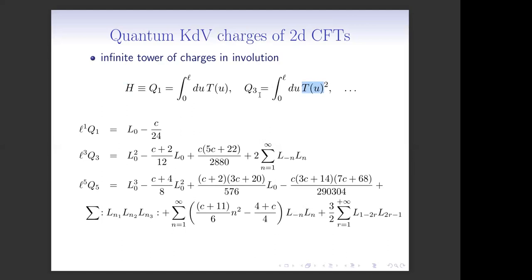The simple form of those Q charges only holds for the first two. When you try to write down the form of those operators in terms of the Virasoro generators, the Hamiltonian is simply L0 minus c over 24. But Q3 already has quite a bulky form, Q5 is much larger requiring two full lines to write down, and Q7 is actually currently not explicitly known.